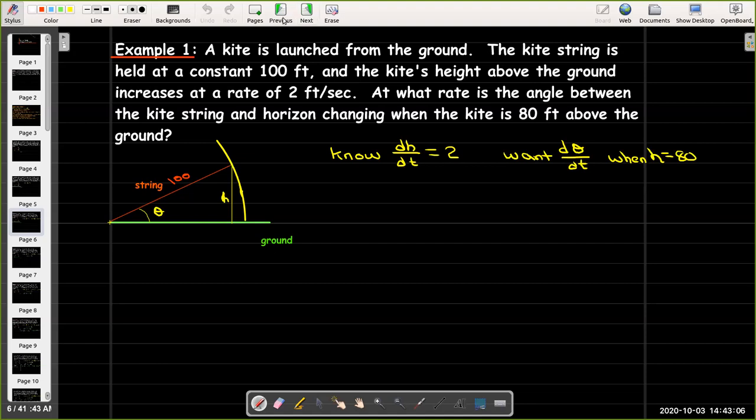What formula would connect them? Well, I have a right triangle here, and opposite of theta is h, and the hypotenuse is 100. So, that would tell me I should use sine. Sine of theta equals h over 100.